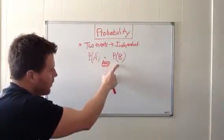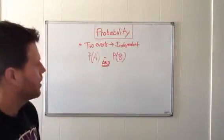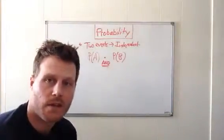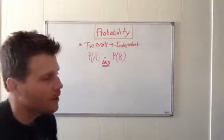event A and the probability of event B occurring. Of course, we're going to multiply those two events together to get the total probability of those two independent events happening at the same time. Just in